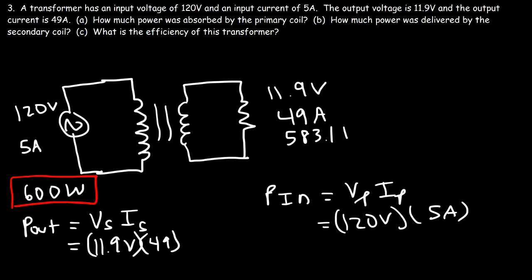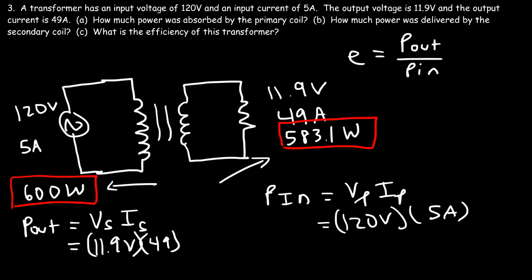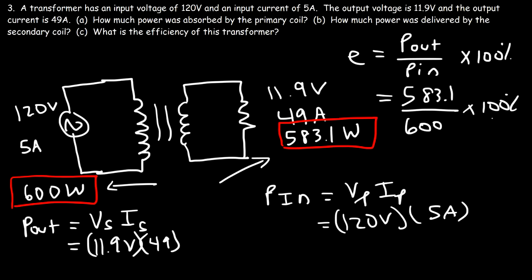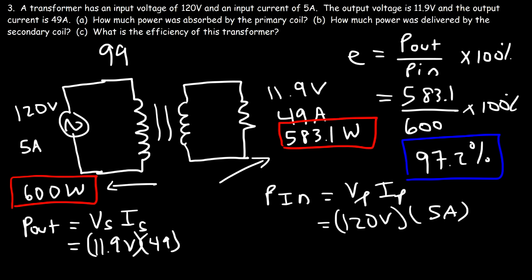The power delivered by the secondary coil is VS × IS = 11.9 times 49 = 583.1 watts. This transformer is not ideal — the powers are not exactly equal. Efficiency equals output power divided by input power times 100%: 583.1 divided by 600 equals 0.9718, so this transformer is 97.2% efficient. Most transformers are around 99% efficient, but no transformer is 100% efficient.